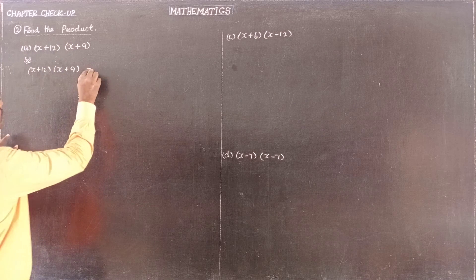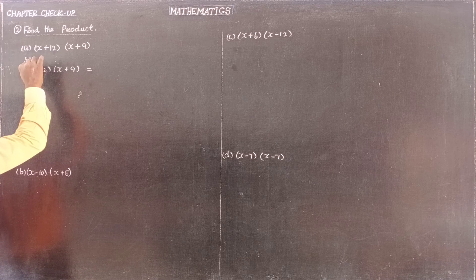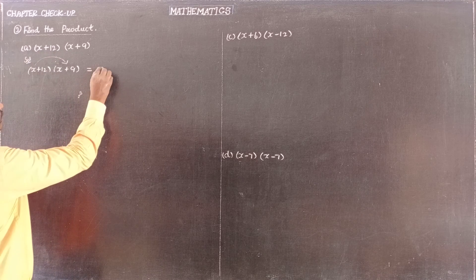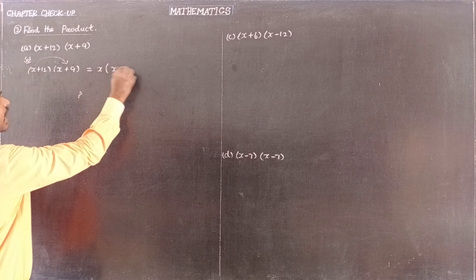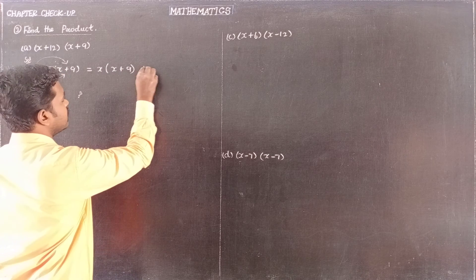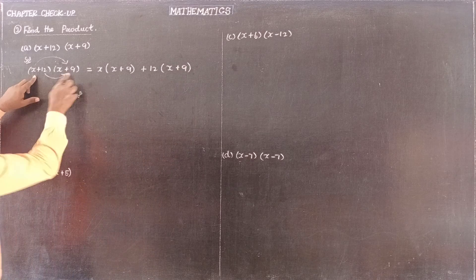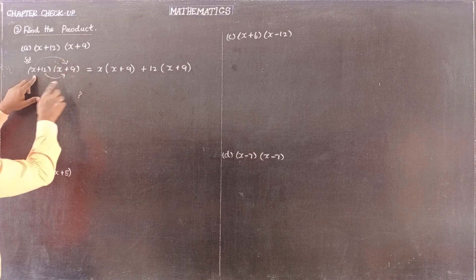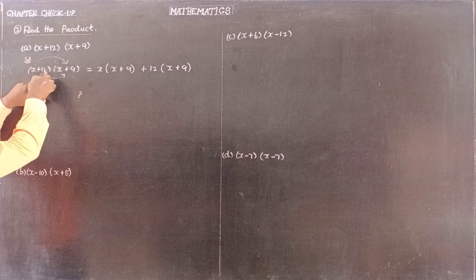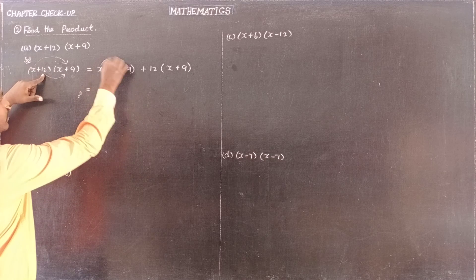To find the product of x plus 12 and x plus 9, we distribute each term. First, multiply x plus 12 by x plus 9. Take the first term and the second term of the second expression and apply the multiply pattern.